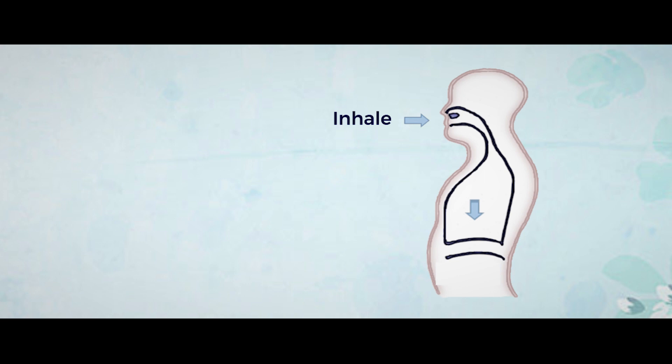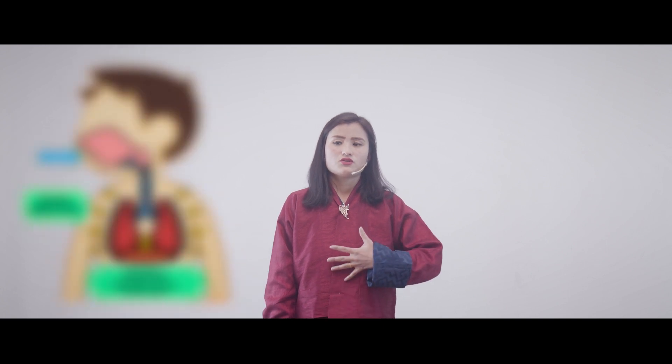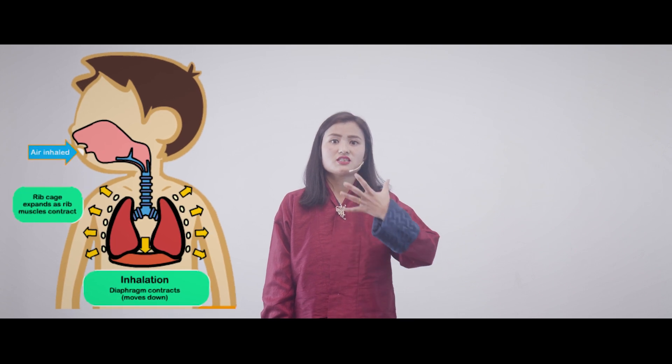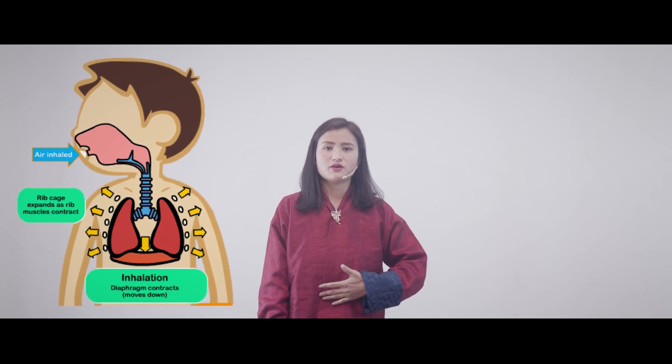During inspiration, there are certain vital organs which play a very significant role. The first is the ribs, then you have your lungs, and you have your diaphragm. The diaphragm is a muscular sheet which divides your upper body from your lower body. When you're inspiring, you can feel that your ribs come out, your lungs take in more air and get inflated, and your diaphragm flattens up.